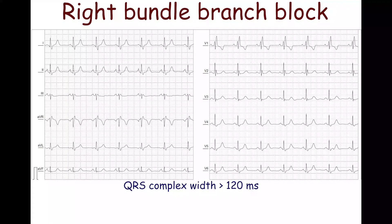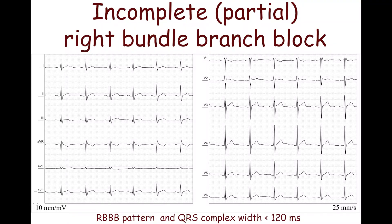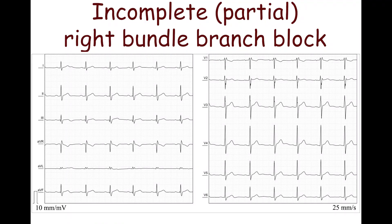Additionally, the QRS complex width exceeds 120 ms. T-wave inversion in the right precordial leads and/or downsloping or horizontal ST segment depression may be seen in leads V1 to V3. If the QRS complex is M-shaped with an RSR' pattern in lead V1, but the width of the QRS complex is less than 120 ms, incomplete — also called partial — right bundle branch block is diagnosed.